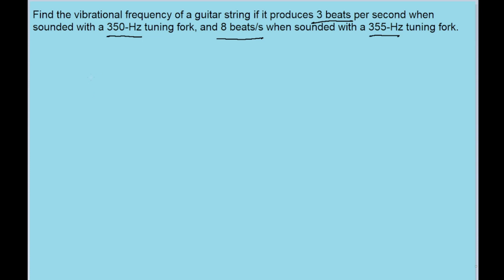In the case of this problem, we have a 350 hertz that creates 3 beats per second, which means that the vibrational frequency of the guitar string must be 3 hertz away from 350 hertz. So it can either be 347 hertz, which is 350 hertz minus 3, or 353 hertz, which is 350 plus 3.